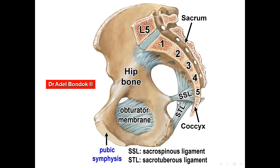The sacrospinous ligament runs between the sacrum and the ischial spine, and the sacrotuberous ligament runs between the ischial tuberosity and the sacrum.